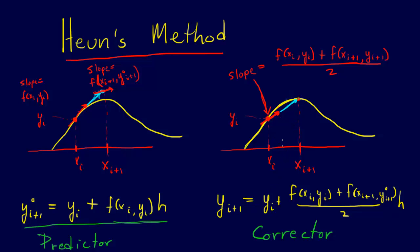And that is exactly what Heun's method does, and you can see that this new slope that it uses is just the average of these two slopes from the predictor. It's the average of the slope, f(x_i, y_i),